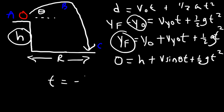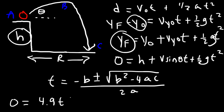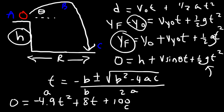For example, if your equation in standard form looks like −4.9·t² plus 8t plus 100 equals 0, then A equals −4.9, B equals 8, C equals 100. Make sure you plug in negative 9.8 for G so that A equals −4.9. Then just plug into the quadratic formula to get the answer.